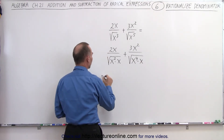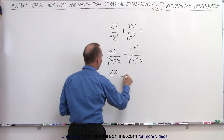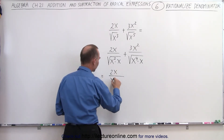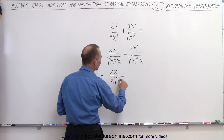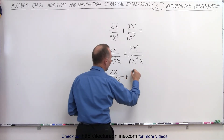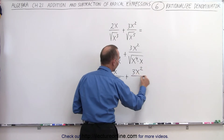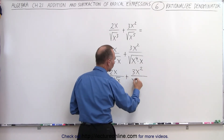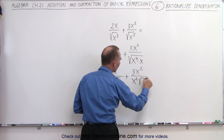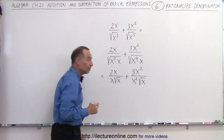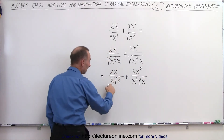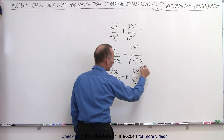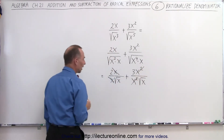So this can then be written as 2x divided by — in this case that would be the square root of x squared, simply x — times the square root of x, plus 3x squared divided by — when you take the square root of x to the fourth that gives you x squared — and then you're left with the square root of x. Now notice: we have an x and an x here, these cancel, and we have an x squared and an x squared there, those cancel as well.